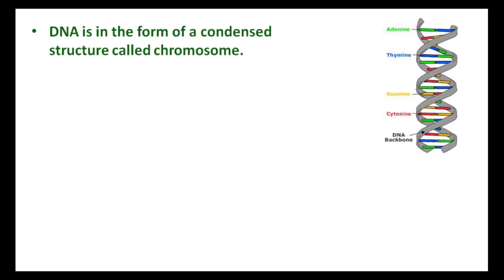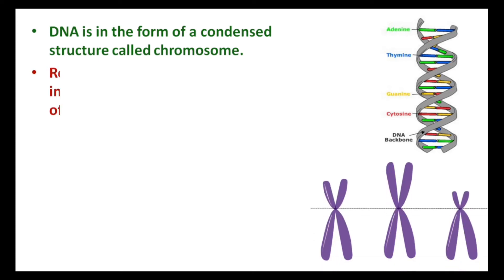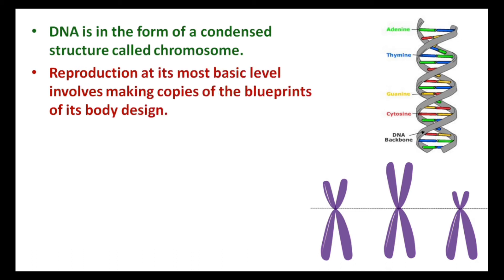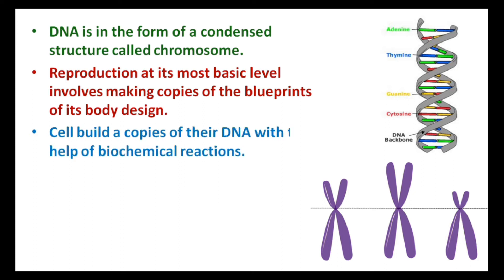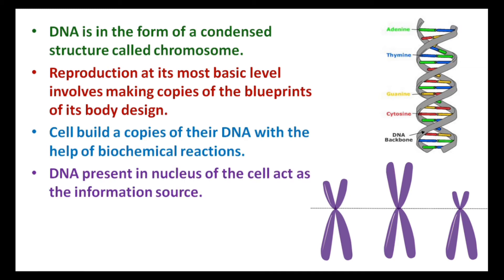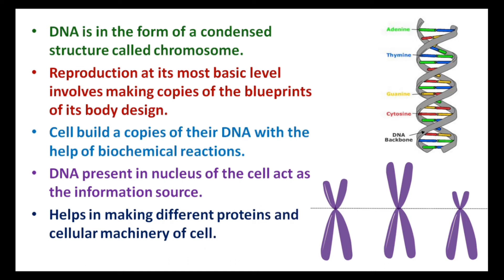As you can see in the figure, different chromosomes are represented by different colors. Reproduction at its most basic level involves making copies of the blueprints of its body design. Cells build up copies of their DNA with the help of biochemical reactions. DNA present in the nucleus of the cell acts as the information source and helps in making different proteins and cellular machines.